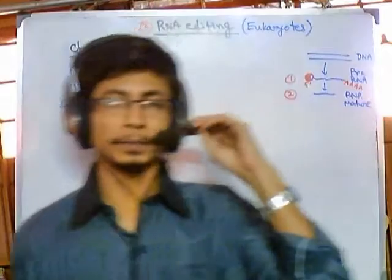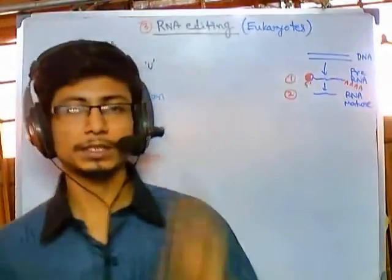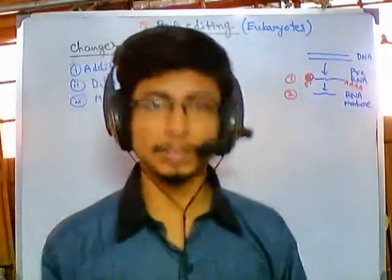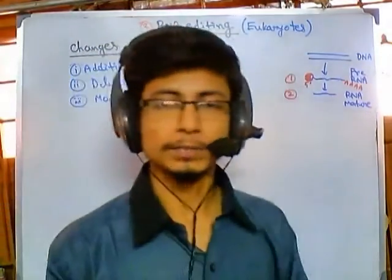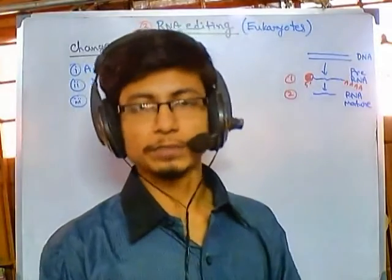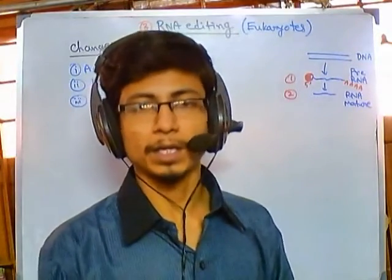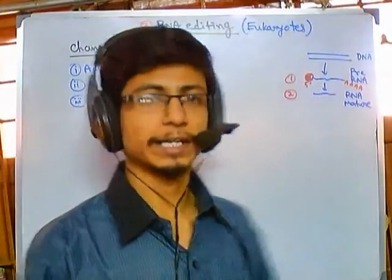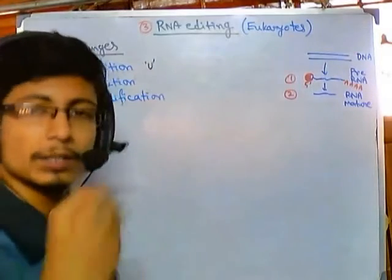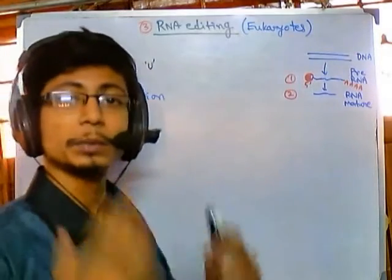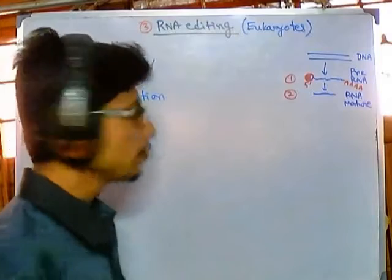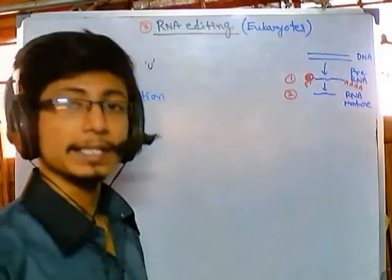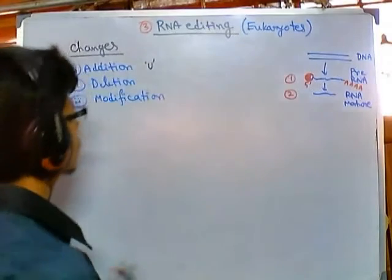Welcome back friends. In the previous video we talked about the introductory part of RNA editing in eukaryotic systems. Now in this video we will be talking about an example or type of RNA editing — specifically the addition or incorporation of uridine inside the RNA sequence using the guide RNA pathway.